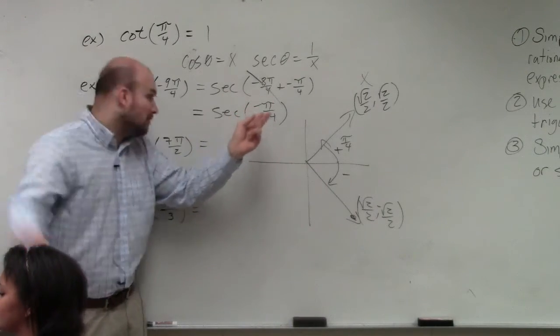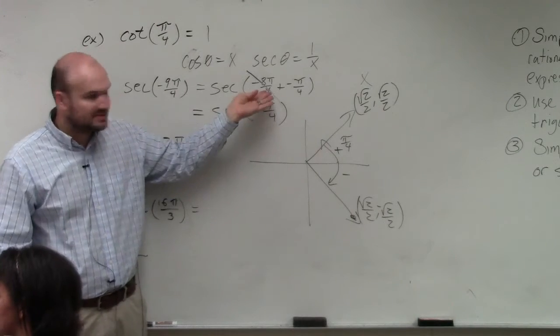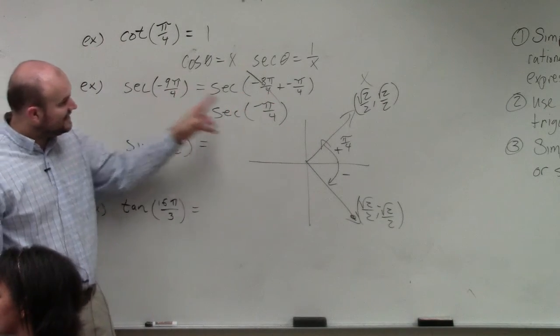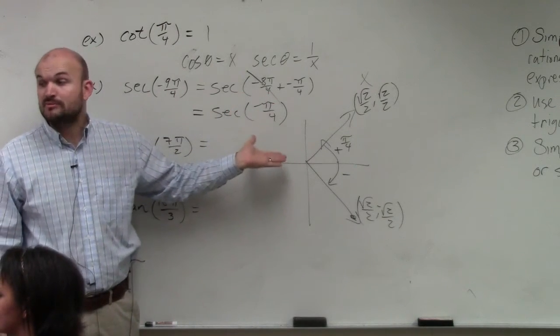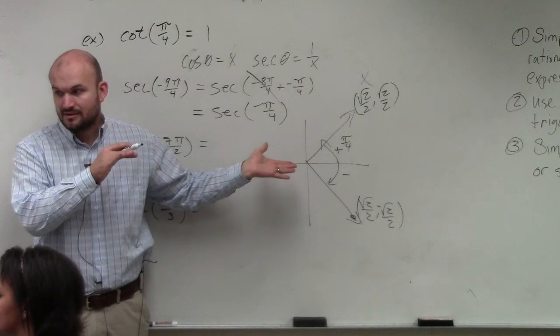Well, when we did coterminal angles, going around the circle is redundant. So it's the same thing. So what I'm telling you is these are coterminal angles. Remember coterminal angles have the same initial and terminal side?